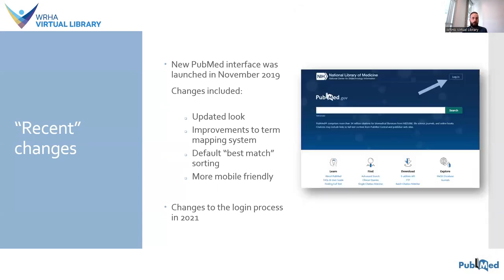A more recent change was made to the login process in 2021. It used to be possible to use a separate NCBI username and password, but in 2021 NCBI began transitioning to relying on third-party account credentials. This means if you're signing up for a new account, you will need to use credentials from an existing account, such as a Gmail or a Microsoft account. If you already have an NCBI account, you can still access it using your old username and password, but NCBI will force you to attach a third-party account once you've logged in.